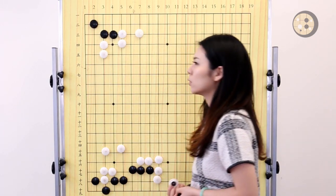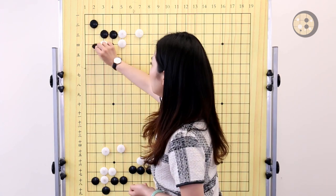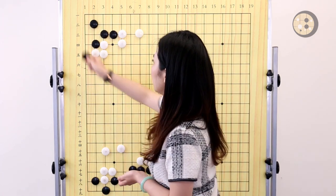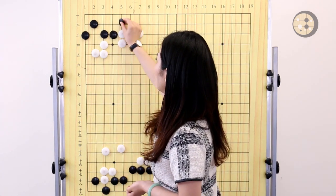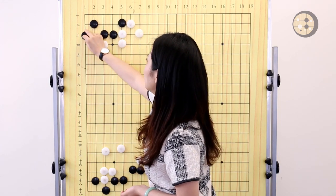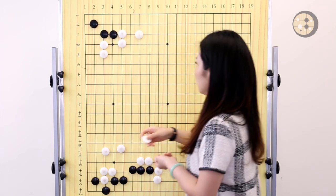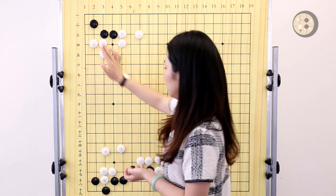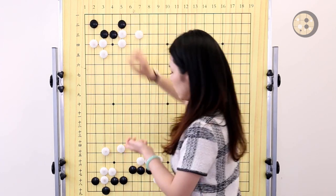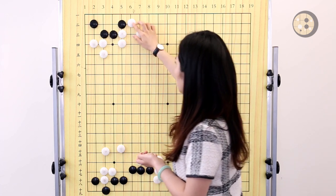After this move, you give yourself two options: either make one eye on the bottom here or expand your eye space on the top. So let's try it. If white says, okay, I'm going to block you here.